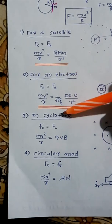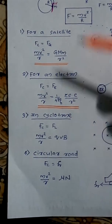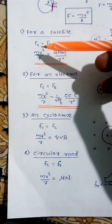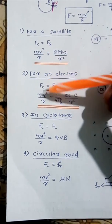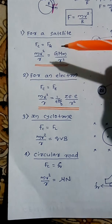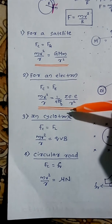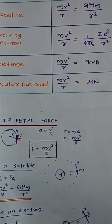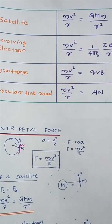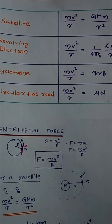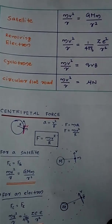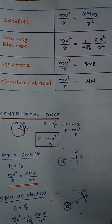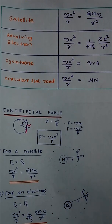To summarize: in every circular motion there is a required centripetal force mv²/r, which is provided by different forces in different situations. For a satellite: mv²/r = GMm/r². For a revolving electron: mv²/r = (1/4πε₀) · q₁q₂/r². For a cyclotron: mv²/r = qvB. For a circular flat road: mv²/r = μN. All these motions are related to circular motion, and the centripetal force is provided by different agencies. Remember these equations.